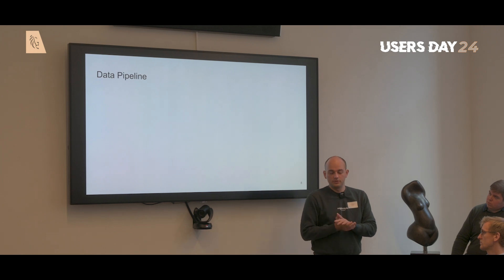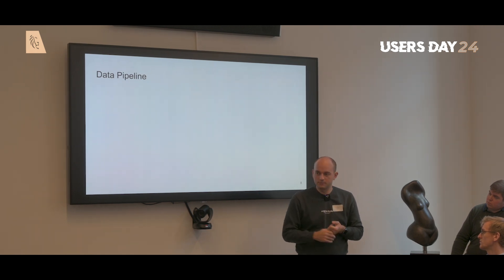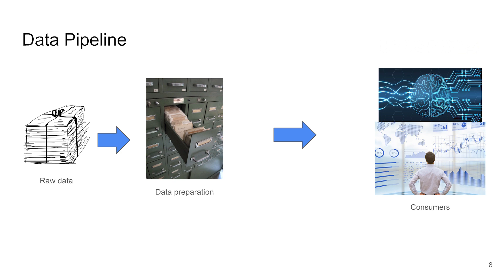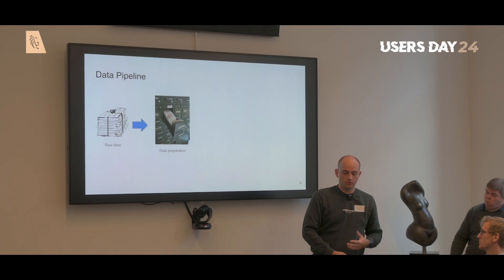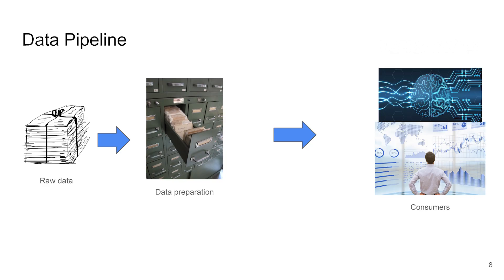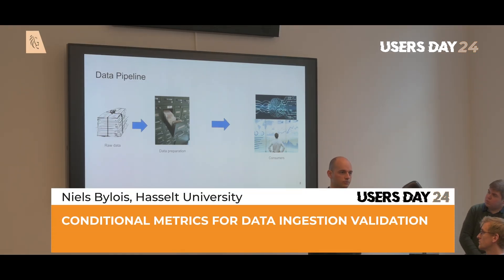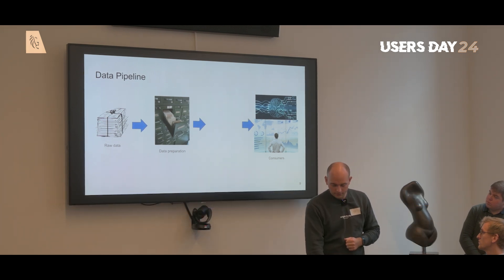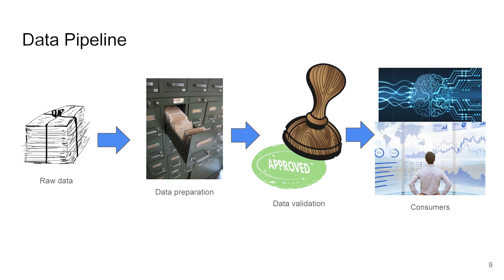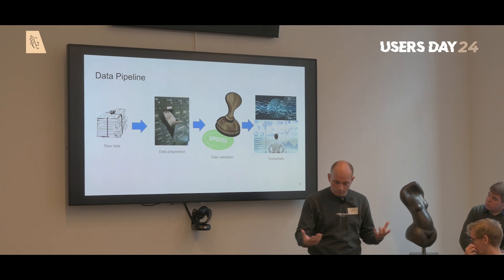Now, how do we tend to do this? We look at the data pipeline. This pipeline is built up from different pieces: we start with some raw data, then we prepare this data according to some processes depending on the business and the use case, and then finally it is handed to data consumers — for example, a machine learning algorithm or a business that has to make decisions. What we intended to do in this thesis was to insert a part between the preparation and consumer step called data validation, to make sure the data is valid and of good enough quality.